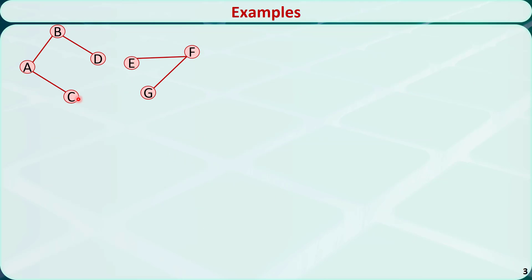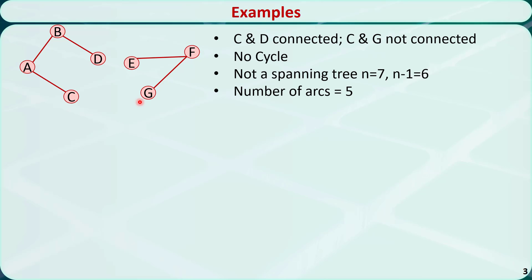In the first example, node C and node D are connected — there is a path from C to D: C, A, B, D. Node C and node G are not connected; we cannot find a path from node C to node G. There is no cycle — if we start from node C, we cannot circle back to node C. This is not a spanning tree because the number of nodes n equals 7, so n-1 equals 6, but the number of arcs is 5, which is not equal to n-1.